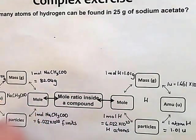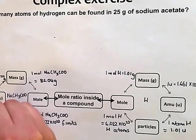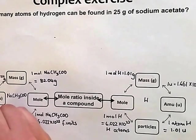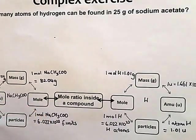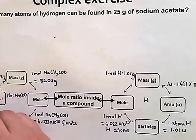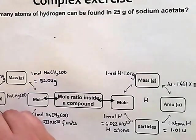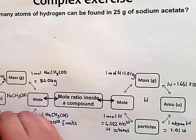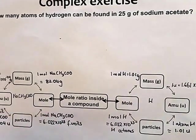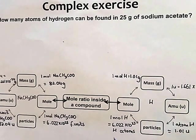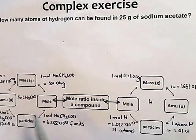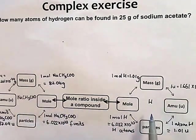And if we now go from moles to formula units, 1 formula unit of sodium acetate, you guessed it, weighs 82.04 atomic mass units. Now we've completely populated both wheels, we need to look at the relationship between wheel 1 and wheel 2.